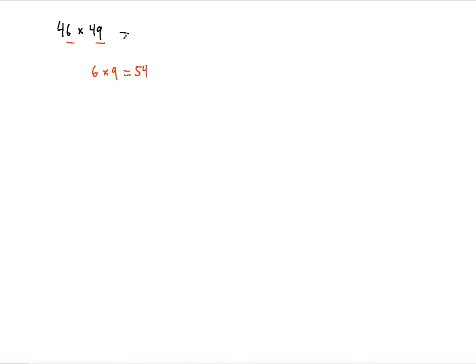You're going to put this 54 here, and now take these fours in the tens place for these two numbers. Put them together, so it's 44. Simply divide 44 by 2 and you get 22. That result goes here, so the answer is 2254.